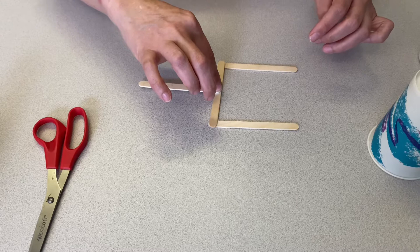Once we have our popsicle sticks fully assembled, we want to give it about 10 minutes for the glue to fully dry.